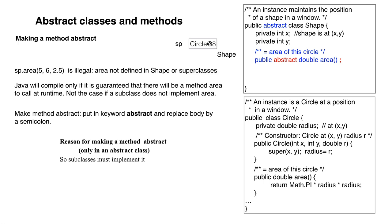So here's a little note. Some subclass C of Shape could also be abstract. If it is abstract, it doesn't have to implement method area, but subclasses of C would have to implement it.